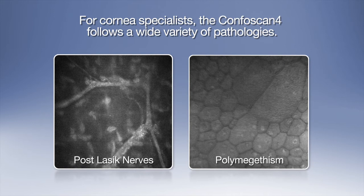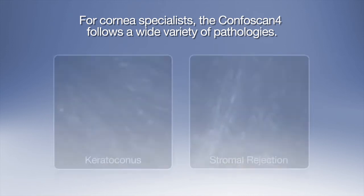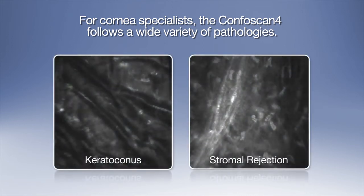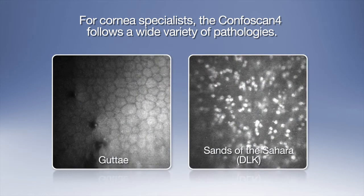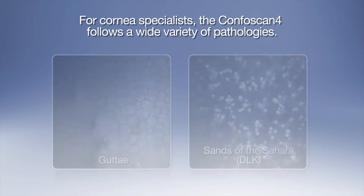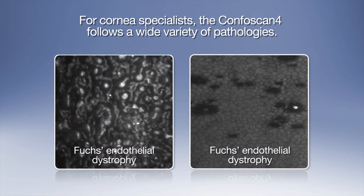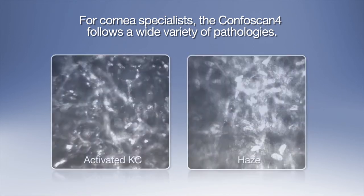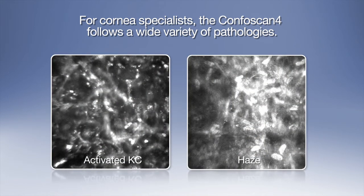For cornea specialists, the CONFOSCAN-4 follows a wide variety of pathologies, allowing for specific treatment to begin immediately. This includes keratoconus, stromal rejection, gutae, sands of the Sahara, Fuchs endothelial dystrophy, activated KC, and haze.